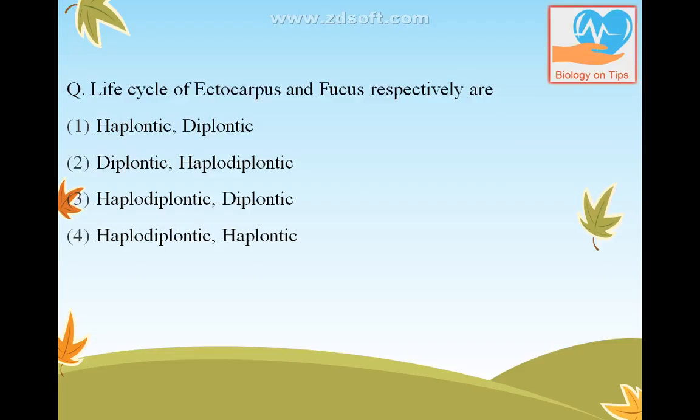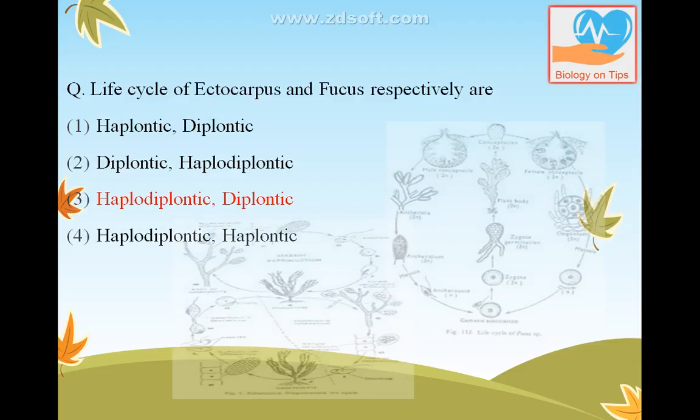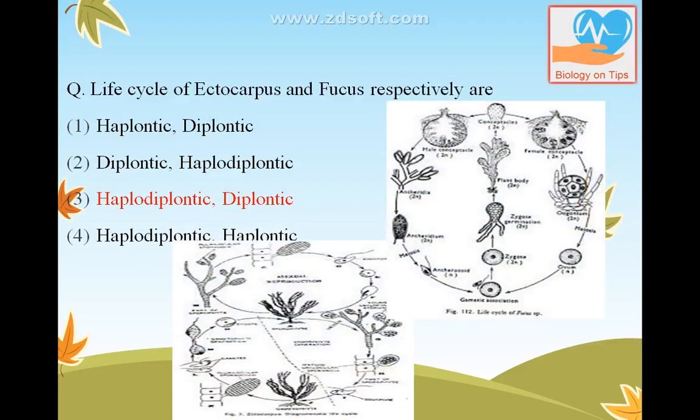The life cycles of Ectocarpus and Fucus respectively are haplodiplontic. You can see both diagrams — this cycle represents the life cycle of Fucus, whereas this one represents the life cycle of Ectocarpus.